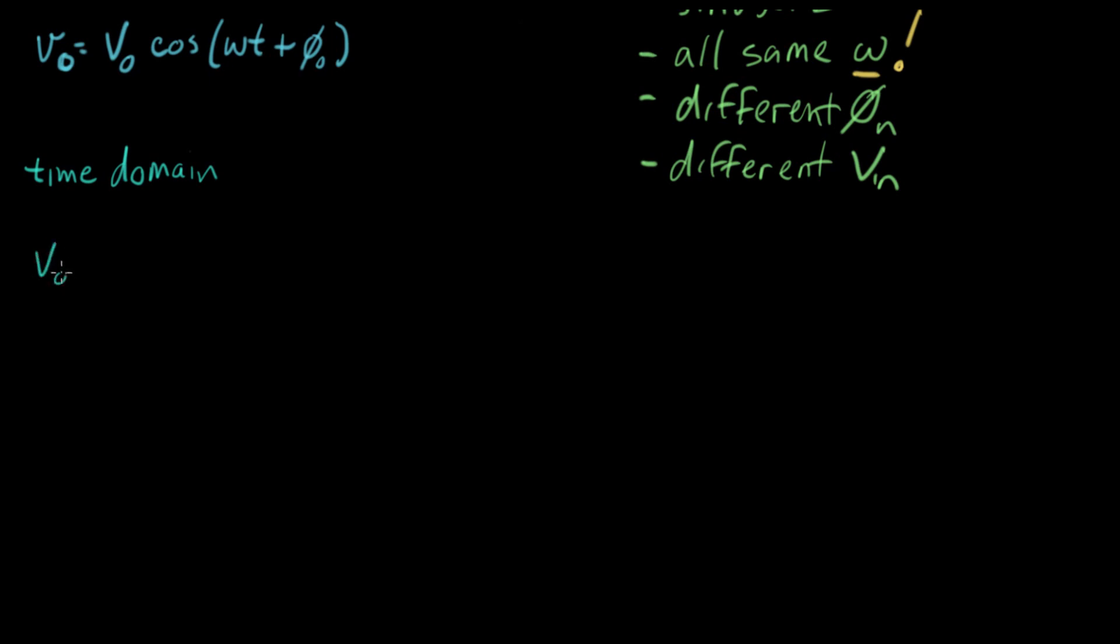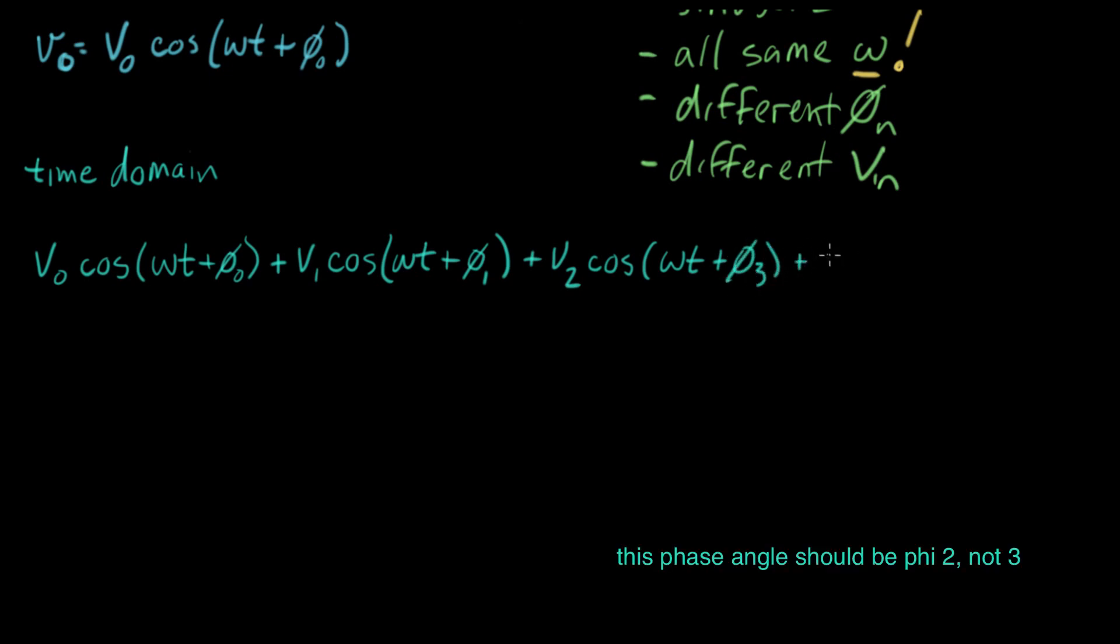The KVL equation was V₀ cos(ωt + φ₀) + V₁ cos(ωt + φ₁) + V₂ cos(ωt + φ₂) + V₃ cos(ωt + φ₃) all equals zero.